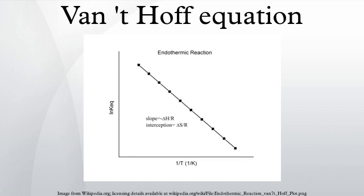For an exothermic reaction, heat is released, making the net enthalpy change negative. Thus, according to the definition of the slope, for an exothermic reaction ΔH is negative and R is the gas constant, so the Van't Hoff plot should always have a positive slope.